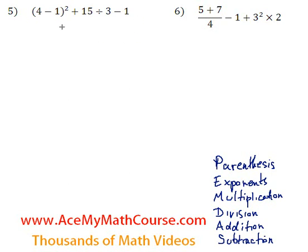Question number 5. Let's start with this expression. Looking at the order of operations, we start with parenthesis, so 4 minus 1 inside the parenthesis, that is just 3.